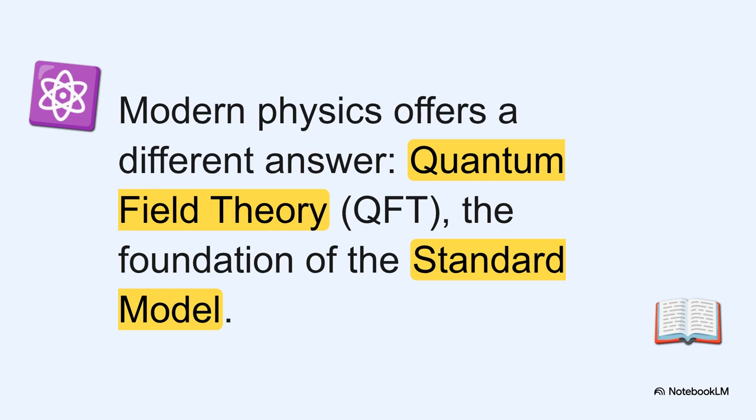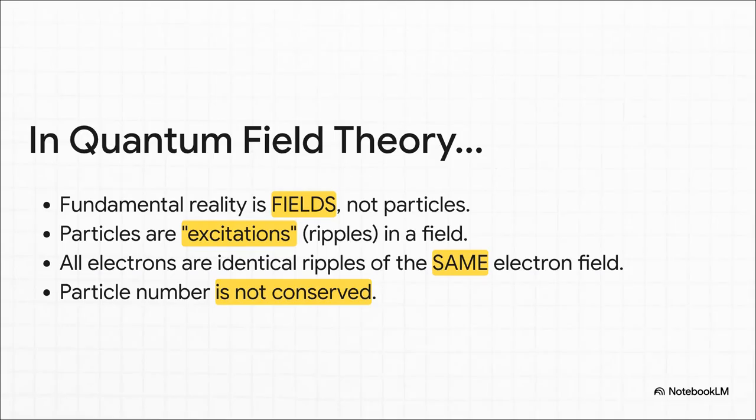And the problems actually go even deeper than that, right to the core of how we now understand reality. You see, the one-electron universe is a particle-first kind of idea. But modern physics? It's built on a completely different foundation called quantum field theory, or QFT. QFT paints a totally different picture. It says the fundamental stuff of the universe isn't particles, but invisible fields that permeate all of space. An electron field, a photon field, and so on. Particles, like electrons, are just little ripples or vibrations in these fields. Why are all electrons identical? Because they're all just ripples in the same underlying electron field.